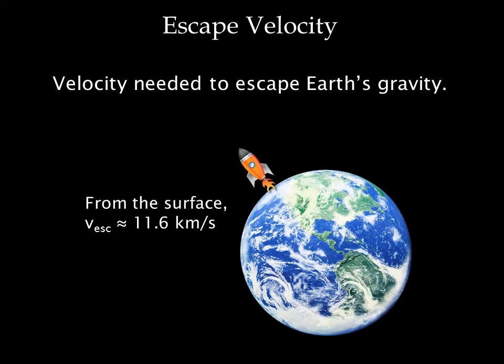The idea of a black hole was predicted in the late 1800s, and to understand where the idea came from, we need to think about escape velocity. An object of a certain mass has an escape velocity — this is the velocity you need to escape the object's gravity. On Earth, for example, you need to be moving at about 12 kilometers per second to break free of Earth's gravity.